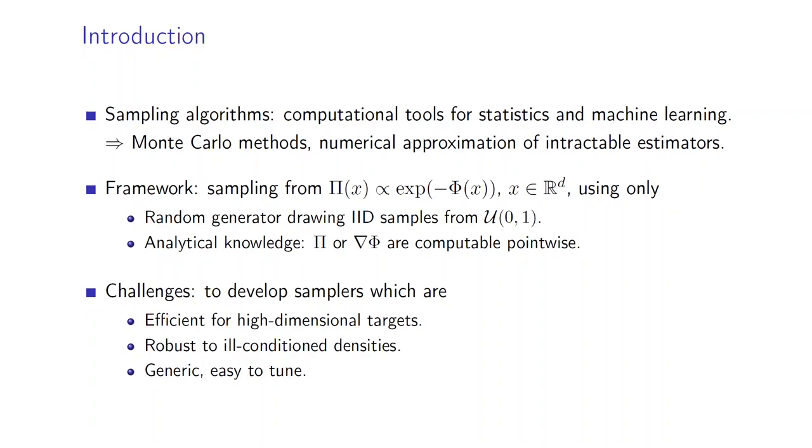We want to generate approximate samples from π using only two ingredients: the first one being a random generator used for drawing IID samples from the uniform distribution between 0 and 1, and the second one being some analytical knowledge about the target distribution.